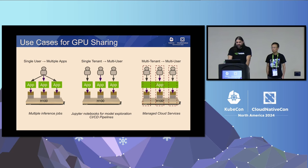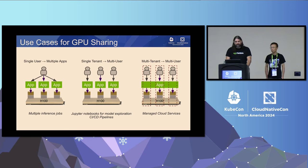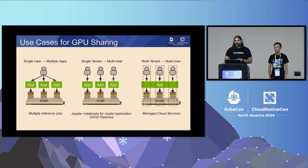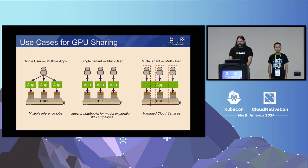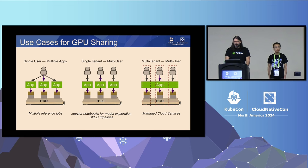A couple of the most obvious use cases for GPU sharing: you can have a single user that wants to run multiple applications on top of a GPU, like multiple inference jobs for testing. You can also have a single tenant with multiple users sharing a GPU because they're running Jupyter notebooks or building models for training but don't have all the details worked out. There are also multi-tenant use cases where multiple users run apps on a single GPU in environments appropriate for managed cloud services.